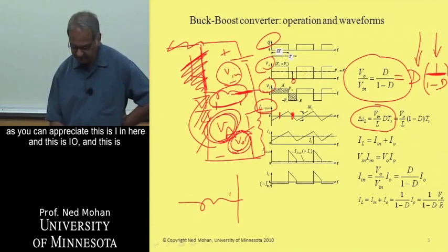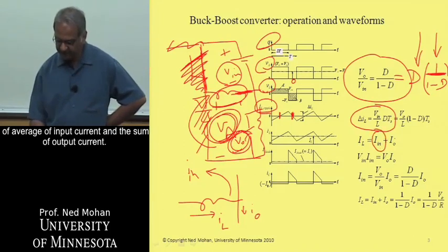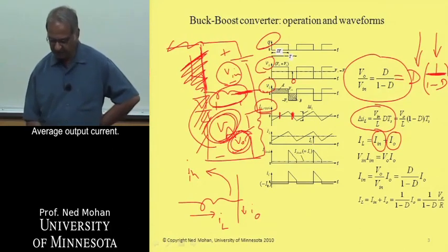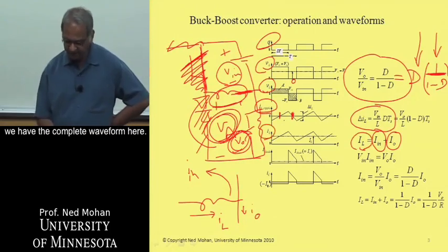as you can appreciate, this is I in here, and this is I O, and this is I L. So the average current is equal to the sum of average input current and average output current. And if you superimpose the ripple on top of the average, we have the complete waveform here.